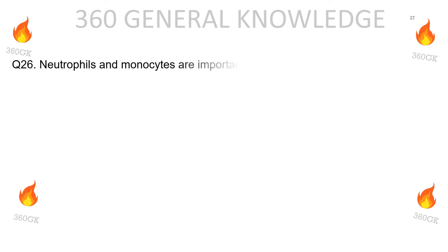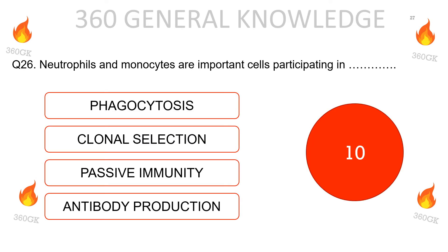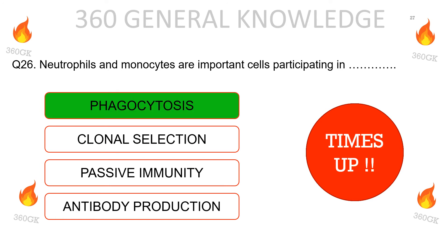Neutrophils and monocytes are important cells participating in: phagocytosis, clonal selection, passive immunity, or antibody production? The correct answer is phagocytosis.